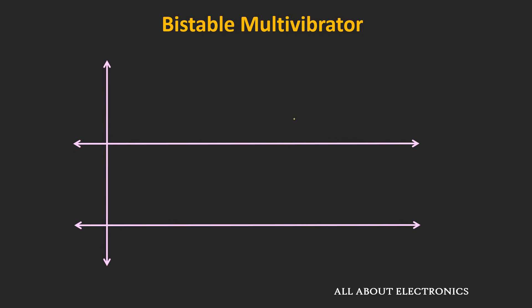And the third type of multivibrator is the bistable multivibrator. In this multivibrator, both states are the stable state. And the output of the multivibrator can be in any of the two stable states.